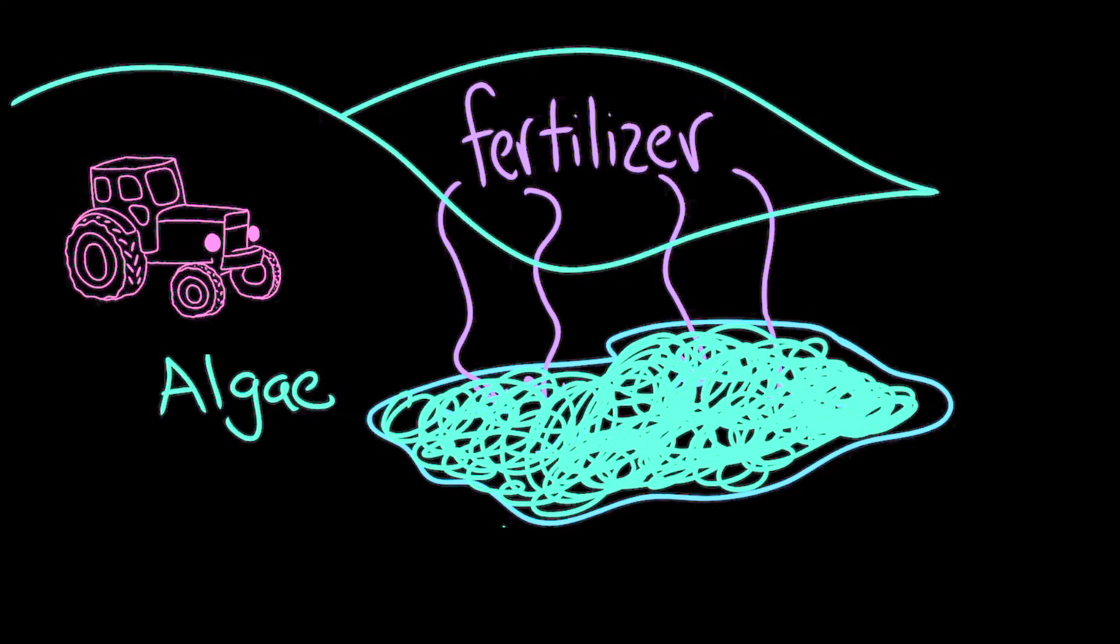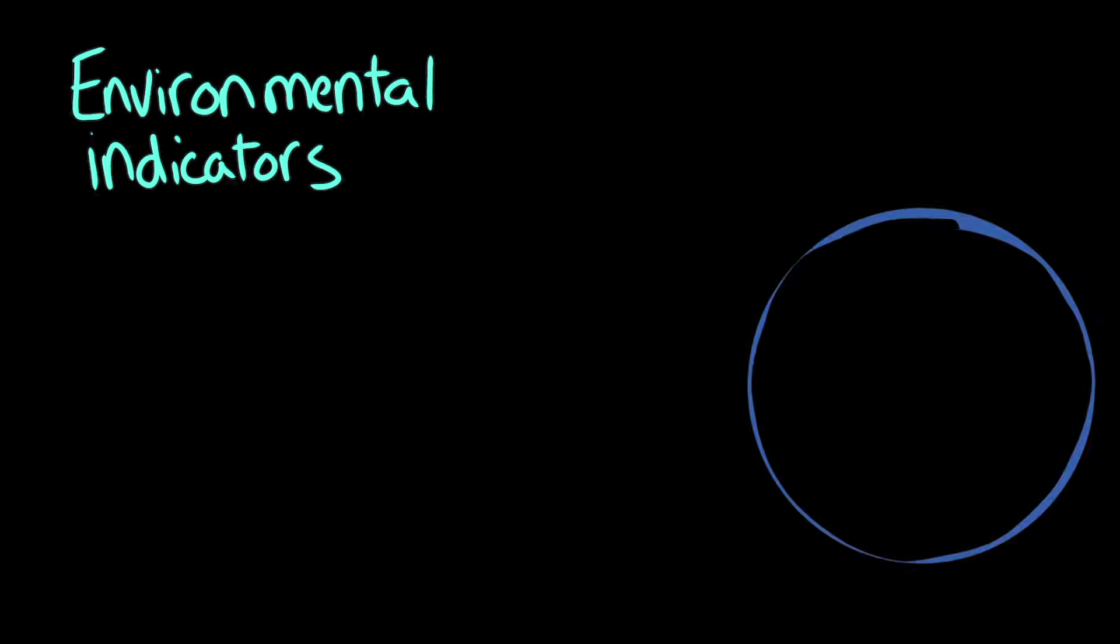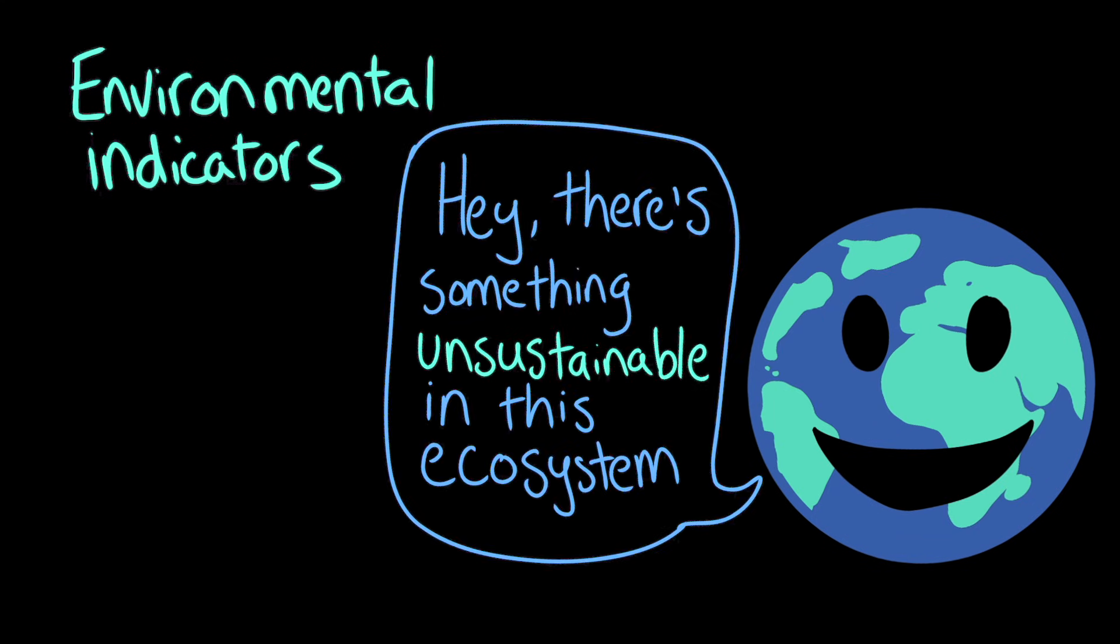But how could a farmer know whether they're using fertilizer sustainably? Well, they could look out for environmental indicators. Environmental indicators are basically when the earth tells us, hey, there's something unsustainable in this ecosystem. But instead of just telling us that straight out, it tells us in a variety of clues.